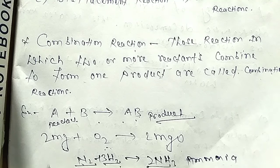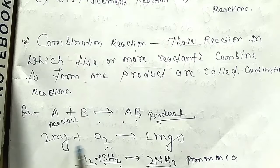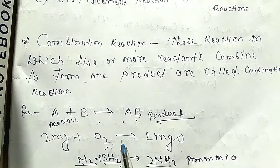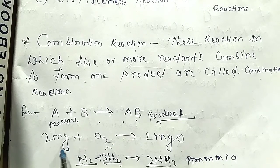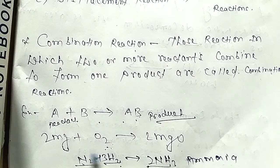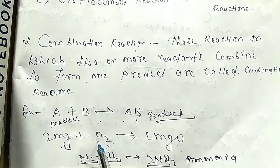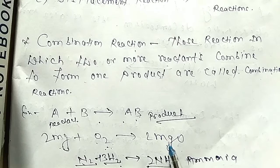Take another example: Mg plus O₂ gives MgO. Magnesium and oxygen are both reactants. When they combine, MgO is formed as the product.